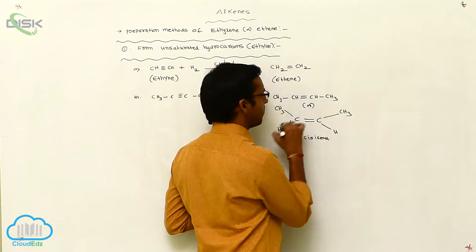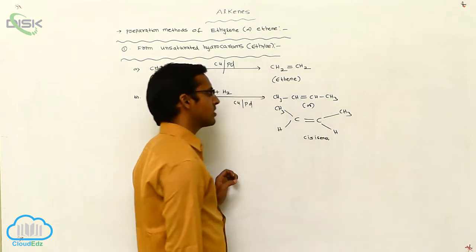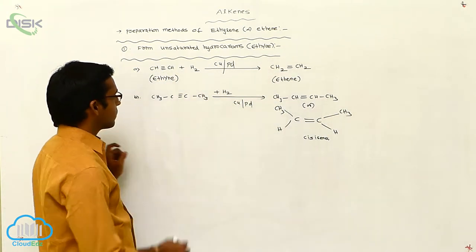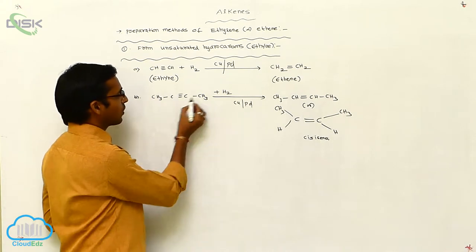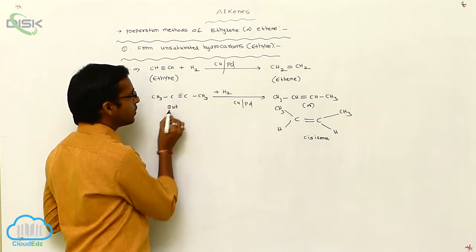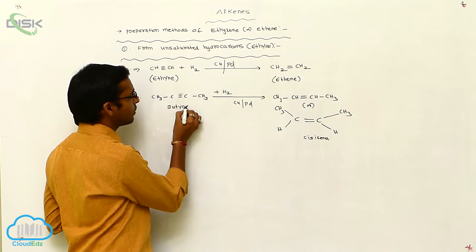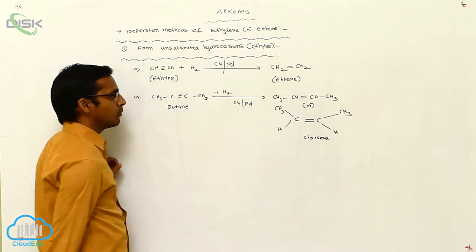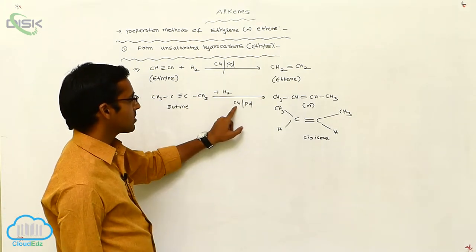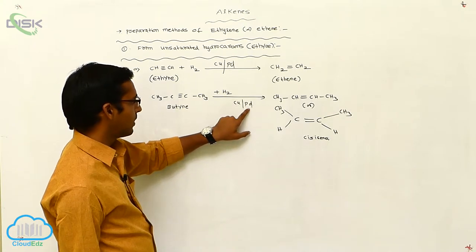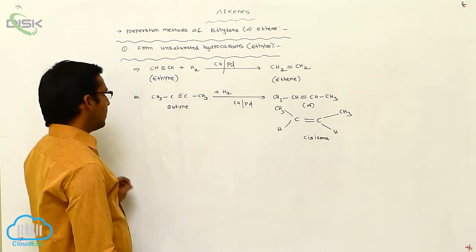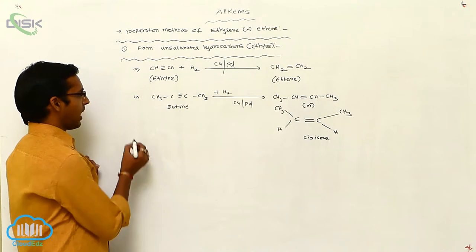Another example with the same product: cis isomer is formed. With four carbons — butyne — the name contains 'but' for four carbons and 'yne' for the triple bond. Butyne undergoes reduction in the presence of copper metal or palladium, giving the cis isomer. Same reaction.